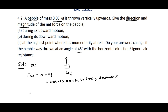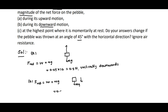During its downward motion, even though the pebble is moving downwards, the weight acting on the pebble is Mg only. So F_net equals weight = M×g = 0.05 × 10 = 0.5 Newton, directed vertically downwards.